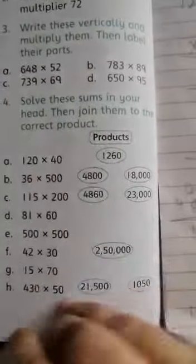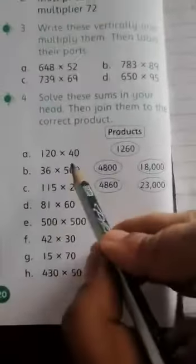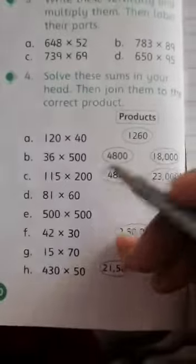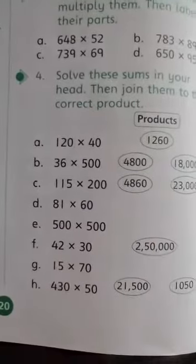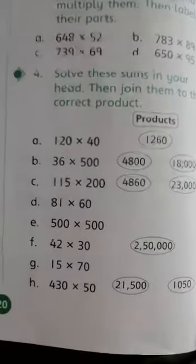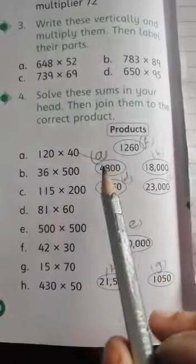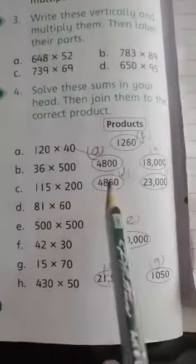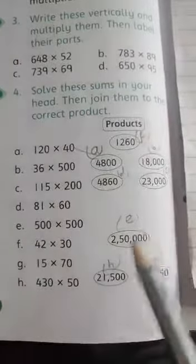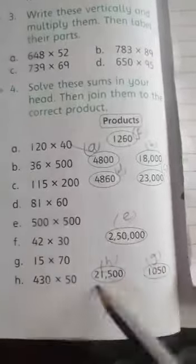All these sums in your head, then join them to the correct product. Very simple - you just solve it on your rough register, and you will get the answer. That is your A, B, C, D, E, F, G, H.